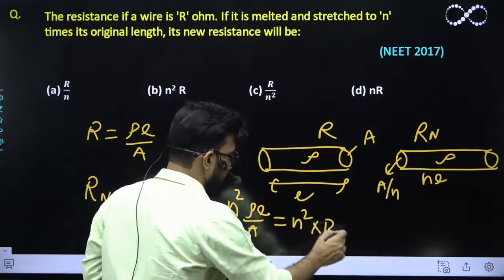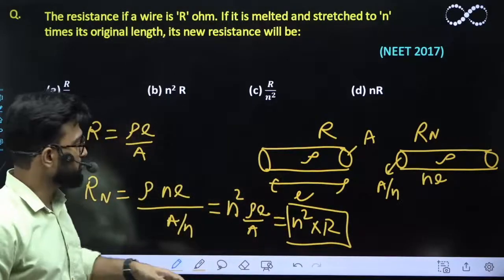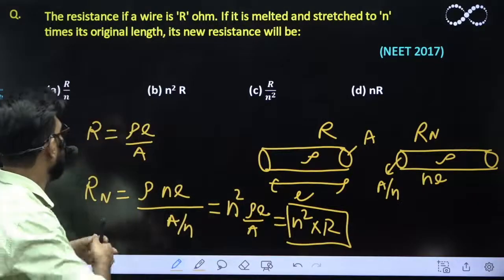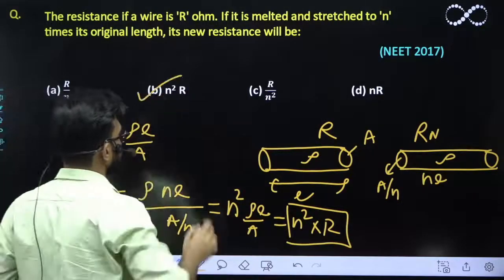So the new resistance that we are getting is n² times the previous value. So the answer that we are getting is option B, which is the correct option.